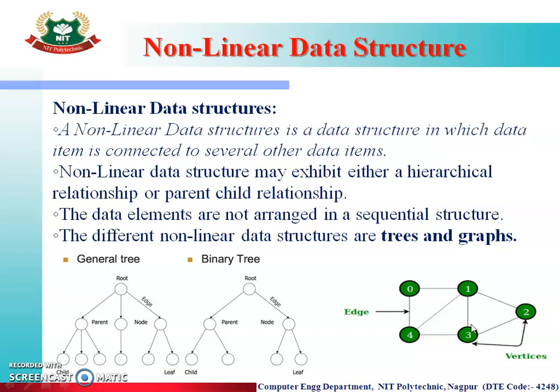Then there is a graph data structure. This graph data structure consists of edges and vertices. If you have a network map, you can represent it — that is nothing but an example of a non-linear data structure.